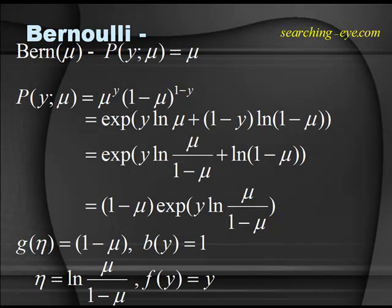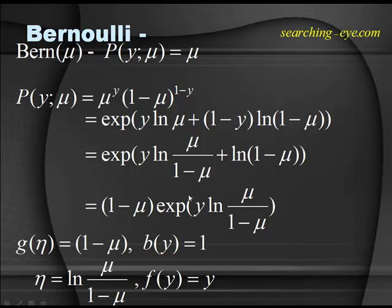Now for the Bernoulli distribution, which is even simpler. Bernoulli(μ): the probability parameterized by μ is μ^y times (1 − μ)^(1−y). Taking the log and then the exponential, this becomes exponential of y·ln(μ) + (1−y)·ln(1−μ), which equals exponential of y·log(μ/(1−μ)) + log(1−μ). It's very easy to derive.